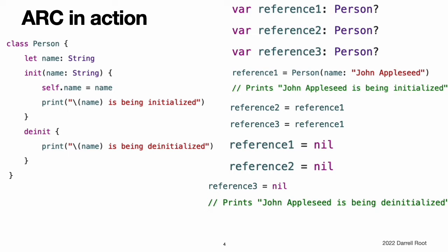ARC in action. Here is an example of how automatic reference counting works. This example starts with a simple class called Person, which defines a stored constant property called name. The Person class has an initializer that sets the instance's name property and prints a message to indicate that initialization is underway. The Person class also has a de-initializer that prints a message when an instance of the class is deallocated. The next code snippet defines three variables of type optional Person, which are used to set up multiple references to a new Person instance in subsequent code snippets. Because these variables are of an optional type, they are automatically initialized with the value of nil and do not currently reference a Person instance.